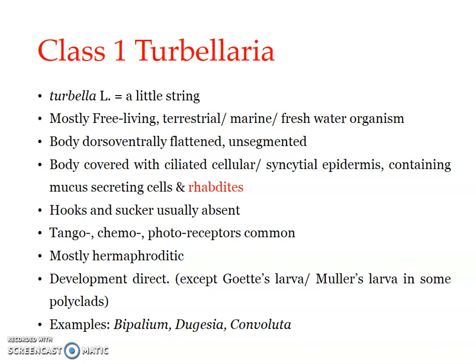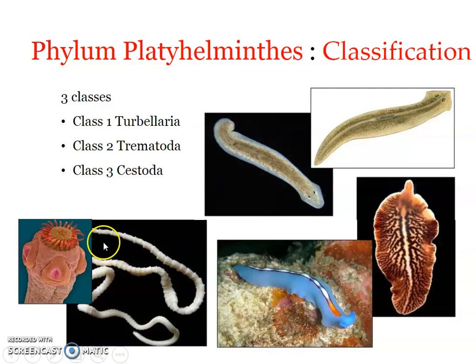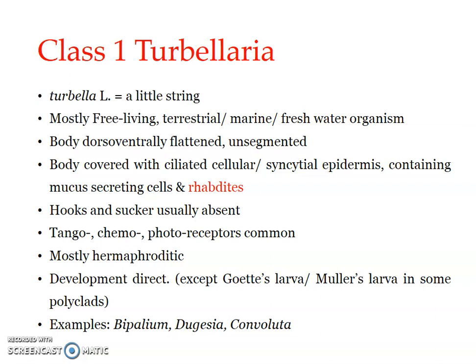The first class we will be discussing is class Turbellaria. The name Turbellaria means in Latin 'a little string.' They include a group of mostly free-living flatworms. Platyhelminthes includes both free-living as well as parasitic forms. Turbellaria includes free-living flatworms inhabiting terrestrial, marine, and freshwater habitats, and most of them are large enough to be visible with the naked eye.